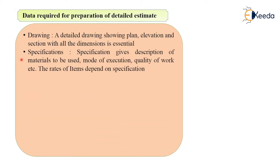Then you will need specifications. Specification will give you the description of material to be used, and specification will also give you what mode of execution you should adopt for a particular construction process, or what should be the quality of work. So all this description is given in the specification - description of materials to be used, mode of execution of work, and quality of work.